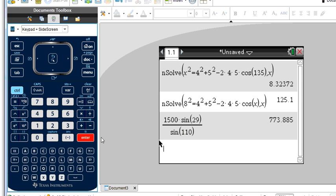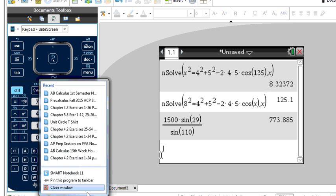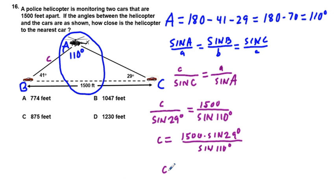And for that we get about, so there's foot, 774 feet. So we go here and we put C is approximately equal to 774 feet. And we hope that's one of our answers up here.